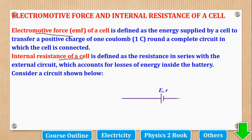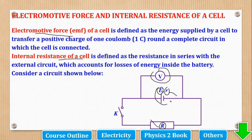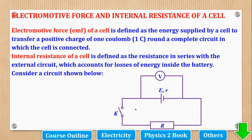We want to derive an expression for EMF relating EMF, internal resistance, external resistance and current. To do that, we need a circuit. In this circuit, E is the EMF and small r is the internal resistance. Internal resistances are denoted by lowercase letters, while external resistances are denoted by uppercase letters. A voltmeter is used to measure the PD, and EMF is also a PD. There is also a switch, and we will observe what happens as we close and open the switch.